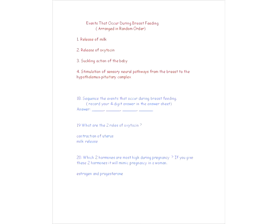Let's look at the sequence of events during breastfeeding. The first action: the baby suckles on the mom's breast. After that, the message has to get to the brain because we want some hormones to be produced. The nerves carry that message from the mom's breast to the brain, and then the hypothalamus causes the release of oxytocin, which is then going to cause the release of milk.